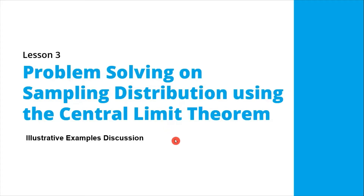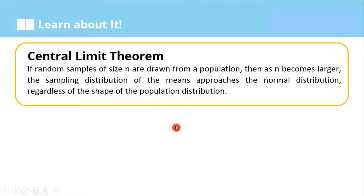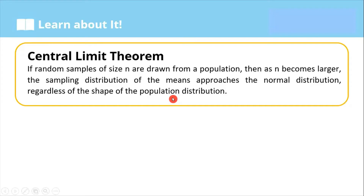Let me explain first the theorem and the properties of the sampling distribution of the sample means. Central limit theorem: if random samples of size n are drawn from a population, then as n becomes larger, the sampling distribution of the means approaches the normal distribution, regardless of the shape of the population distribution.